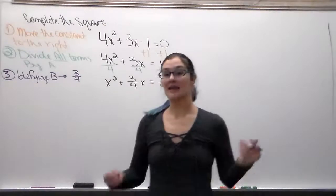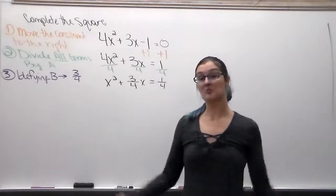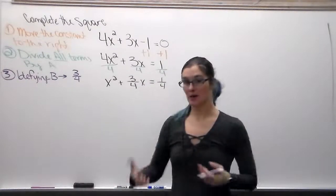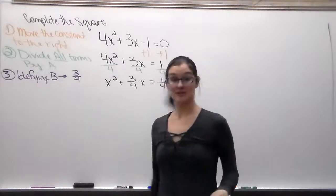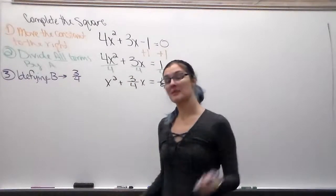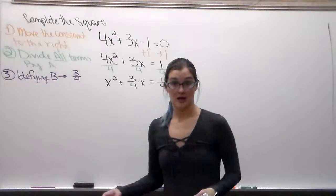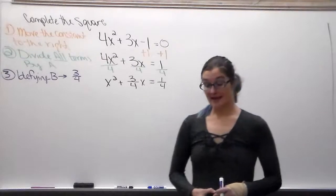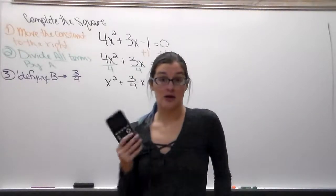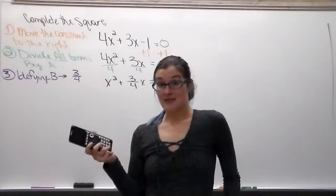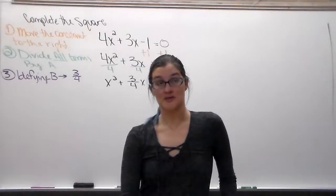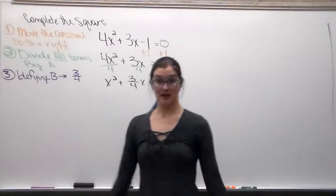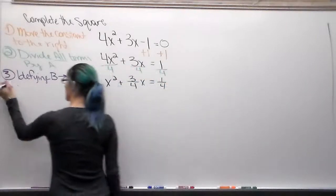For the second part of Step 3, I tell you to multiply b by 1/2. A lot of students ask why we don't just divide by 2. When there's a fraction, multiplying by 1/2 is a whole lot easier than dividing by 2, because for most of us we're not completely comfortable with fractions, and dividing fractions is a lot more difficult to put into our calculators. So I always tell students to multiply by 1/2.